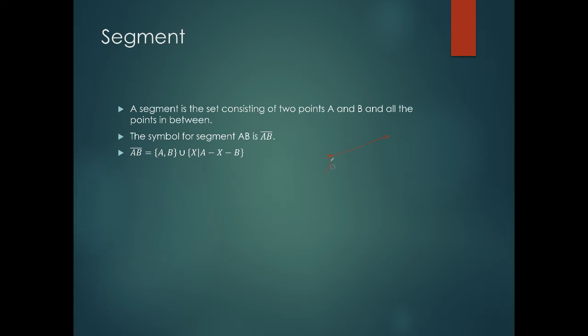Segment AB equals A and B, two endpoints, union all X such that X is between A and B. So you have to get all the points between A and B.